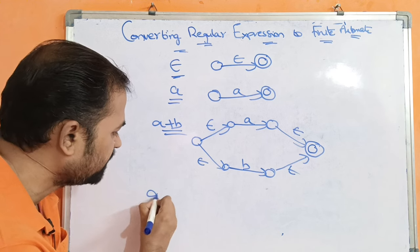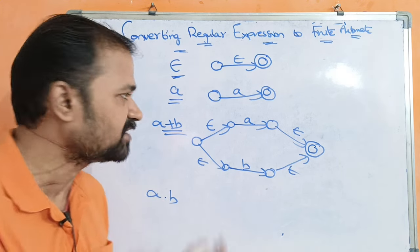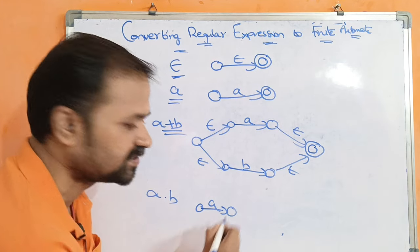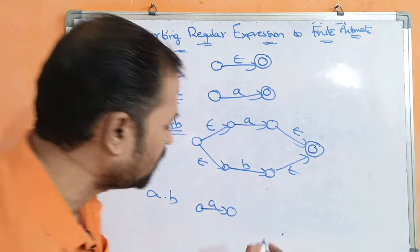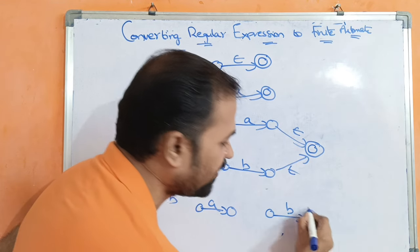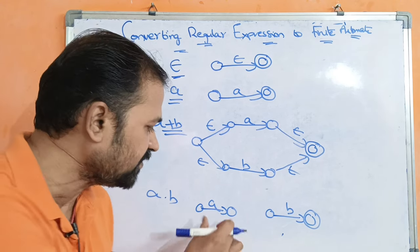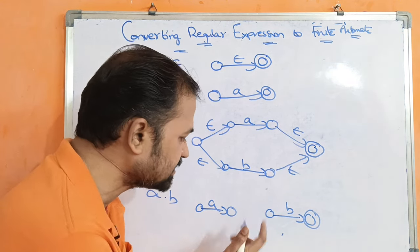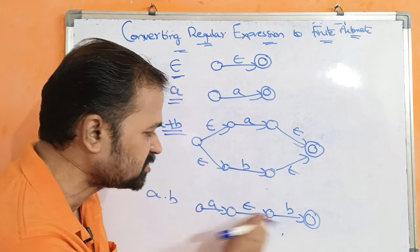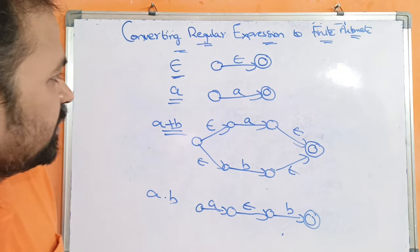For a dot b, dot stands for concatenation. For representing a we require two states, and for representing b we also require two states, let it be the final state. We perform concatenation by applying input a from this state to this state, and like this we can represent a dot b.